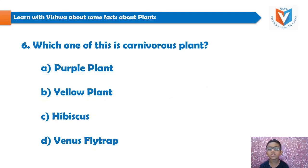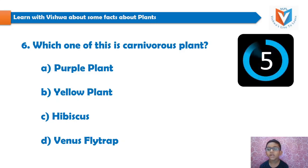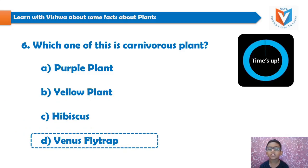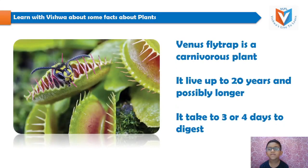And the sixth question is: which one of these is a carnivorous plant? Purple plant, yellow plant, hibiscus, Venus flytrap. Your 5 seconds time starts now... time's up. And the answer is Venus flytrap. Venus flytrap is a carnivorous plant. It can live up to 20 years and possibly longer. It takes 3 or 4 days to digest.